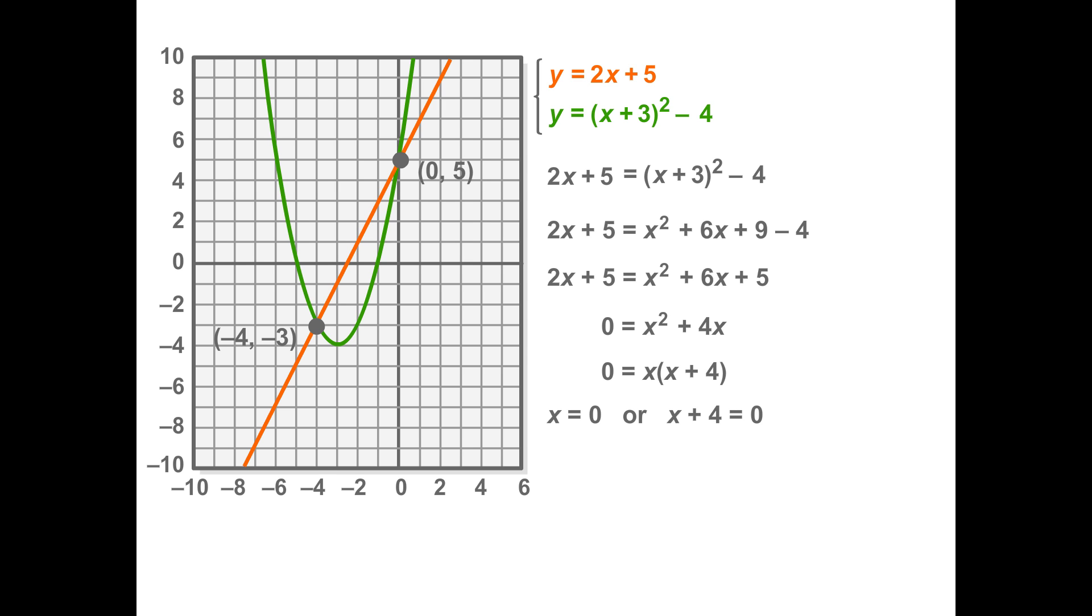Two values, 0 and negative 4, are the x-coordinates for both solutions. Substituting these into one of the original equations gives the y-coordinate for each solution.